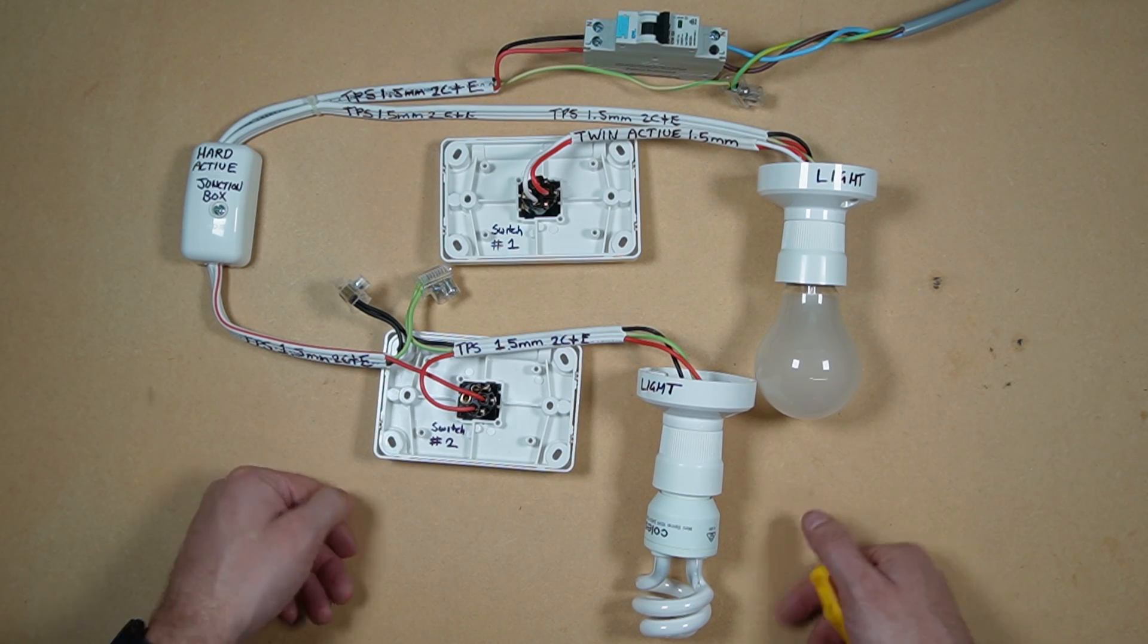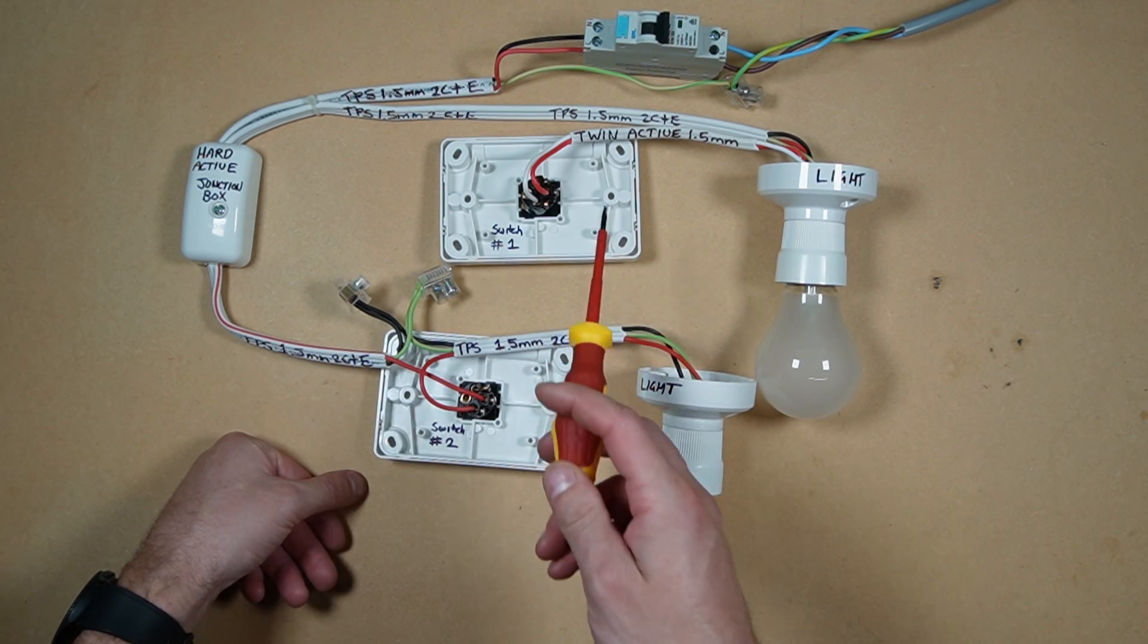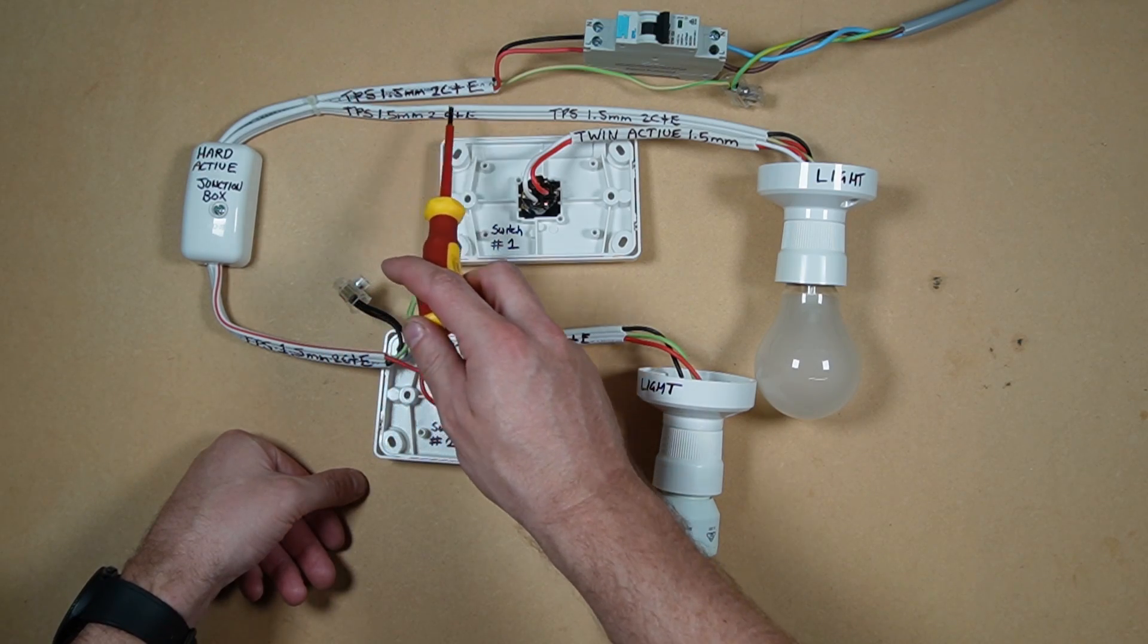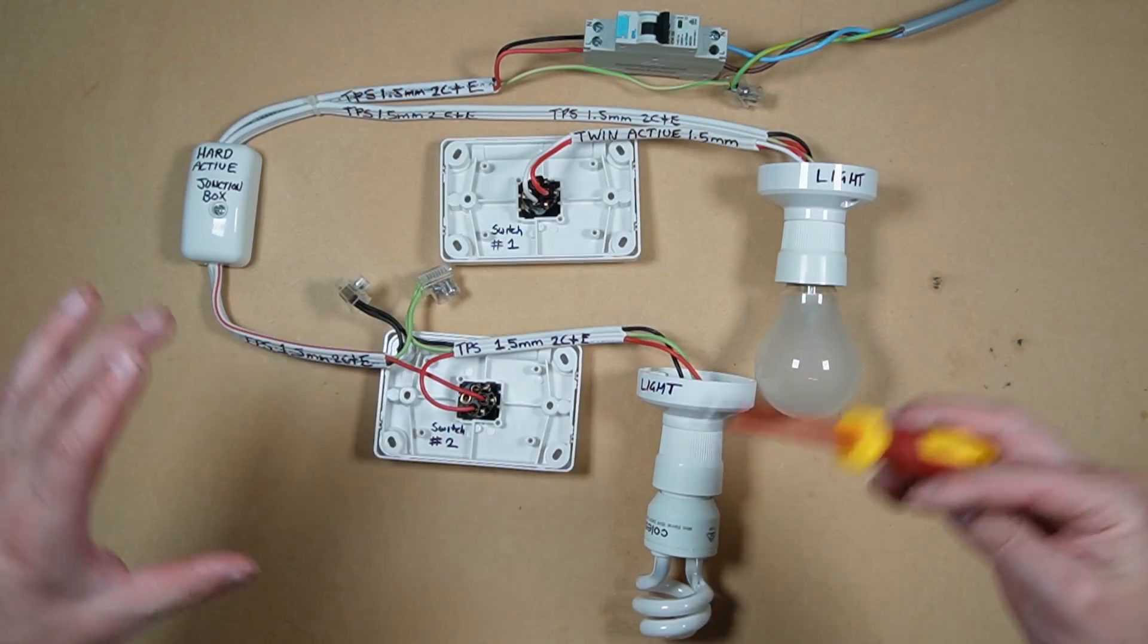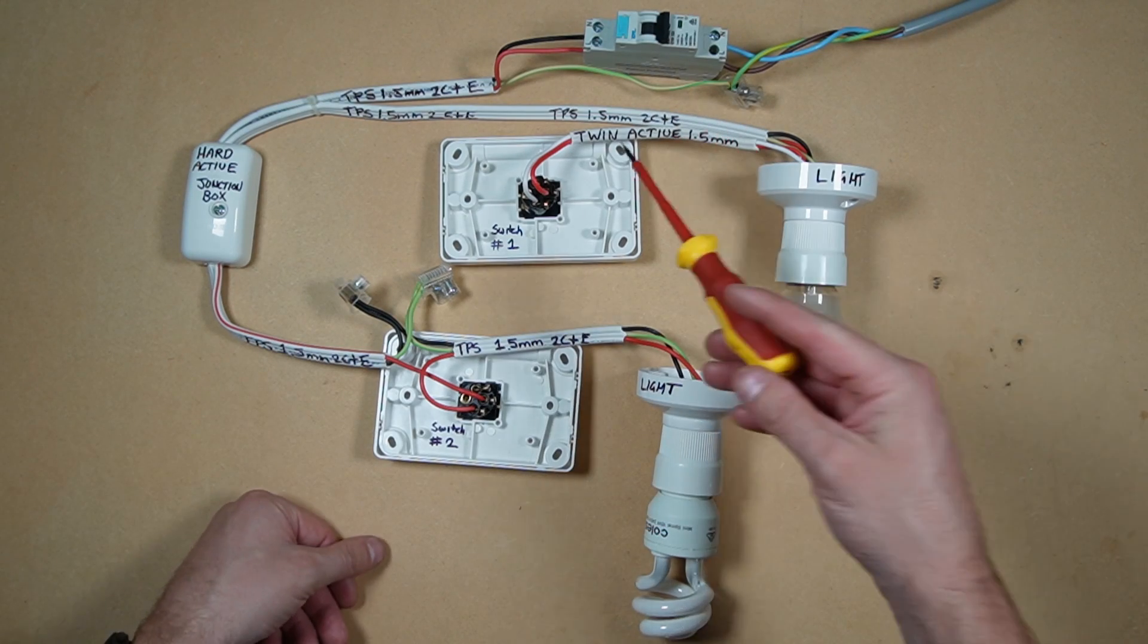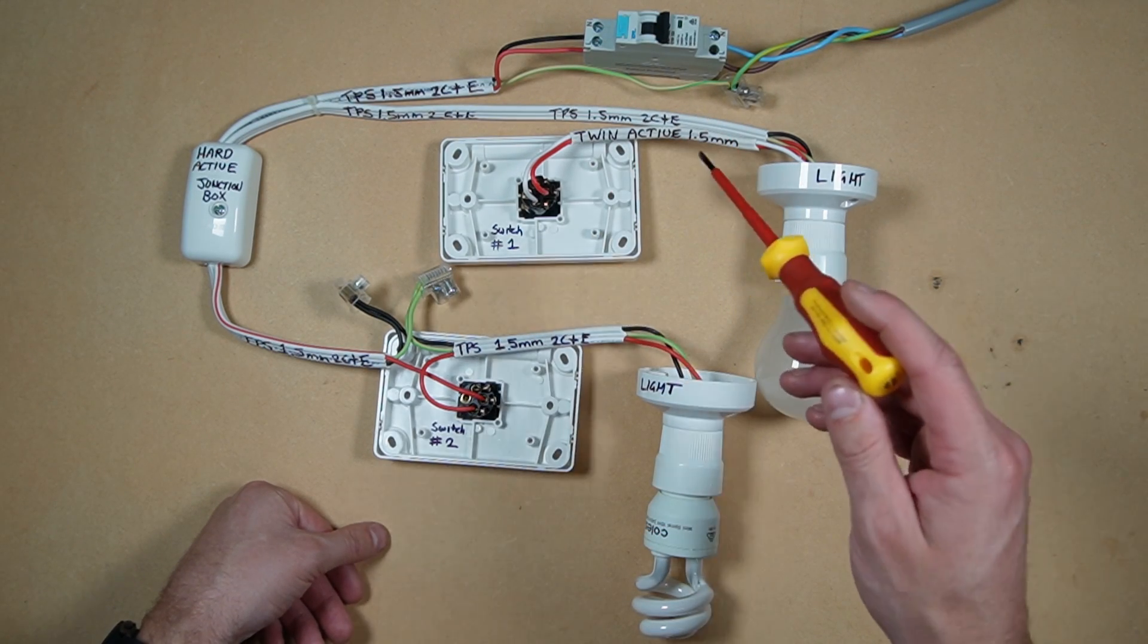So let's get started. What cable am I using? I'm using TPS 1.5 millimeter two-core and earth cable in both methods, and I'm using a twin active 1.5 millimeter in the looping at the light method. That is not required in the looping at the switch method.